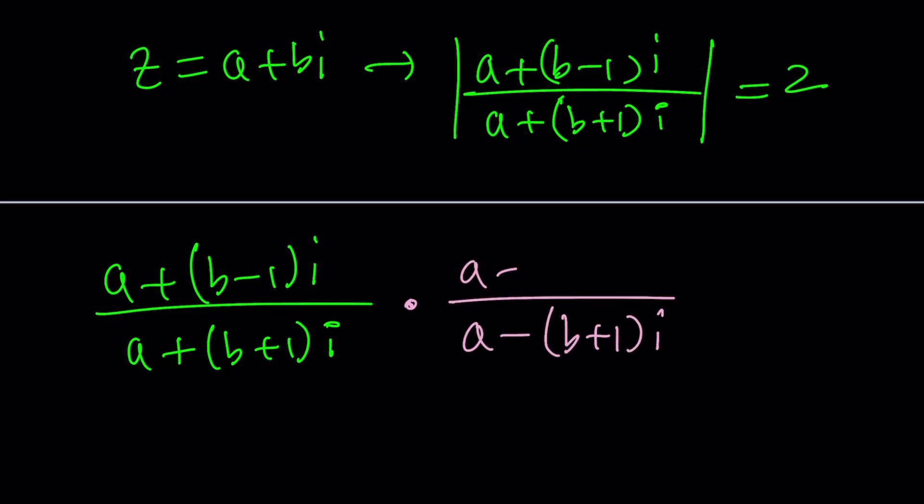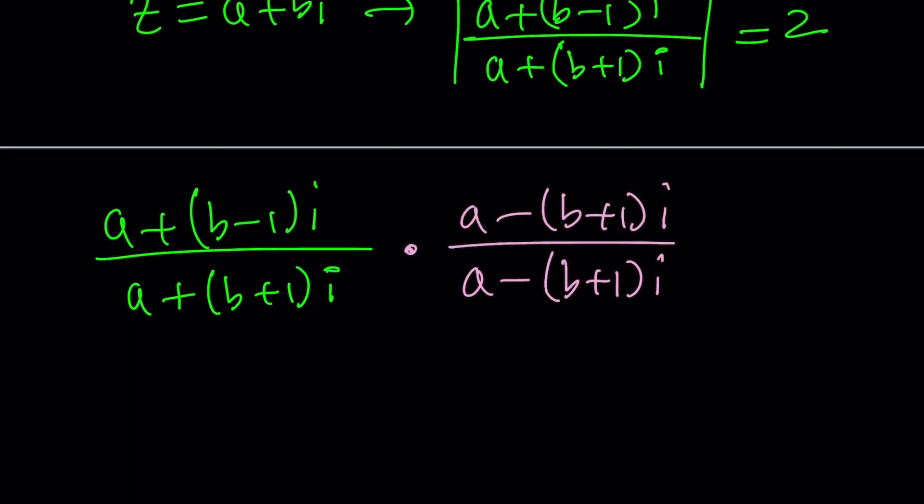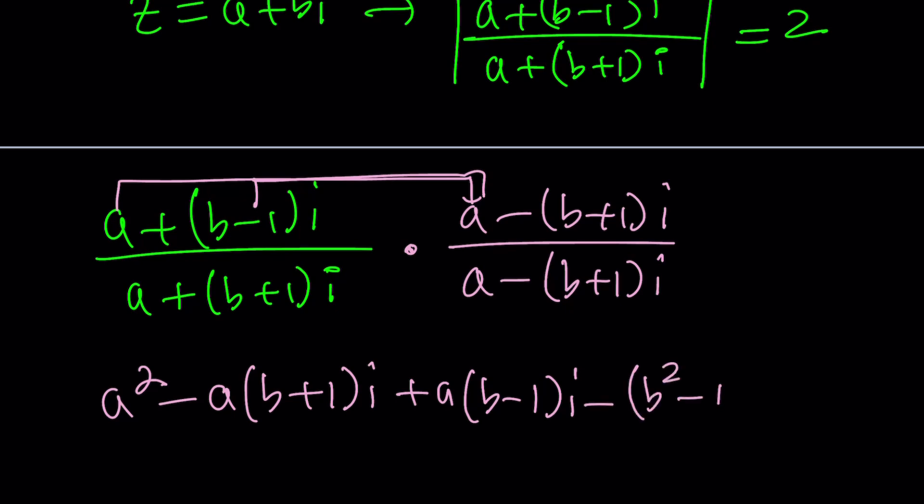And of course we have to do the same thing here. And then we're going to get a product which is kind of like this. A times A is A squared and then A times B plus 1 I, but with a minus sign, it's going to look like this. And then I'm going to multiply these two. That's going to give me A times B minus 1 I. And finally, when you multiply B minus 1 I and B plus 1 I, that's going to give you B squared minus 1 times I squared. But I squared is negative 1, so it's going to be a minus sign. And this will be B squared minus 1.